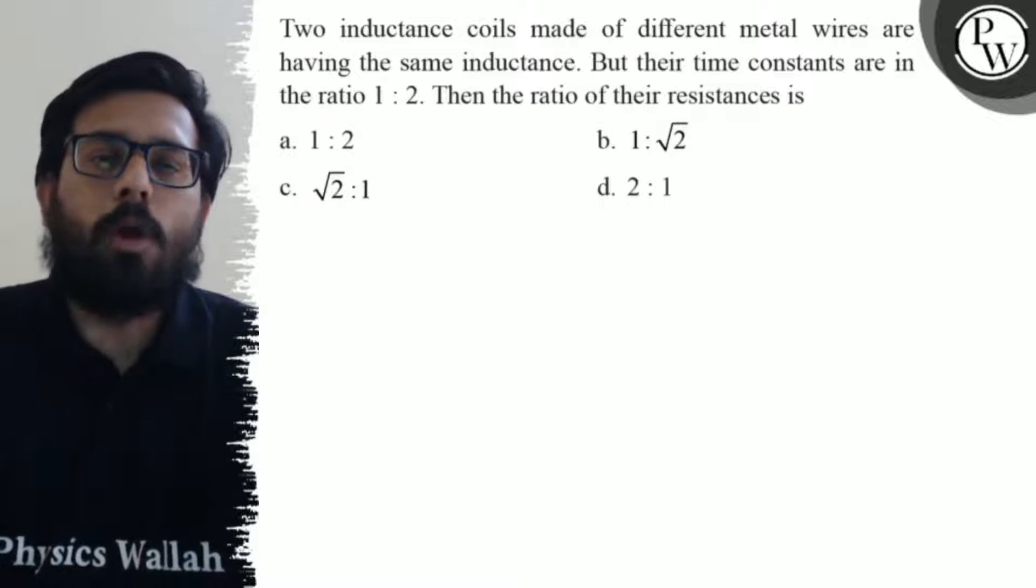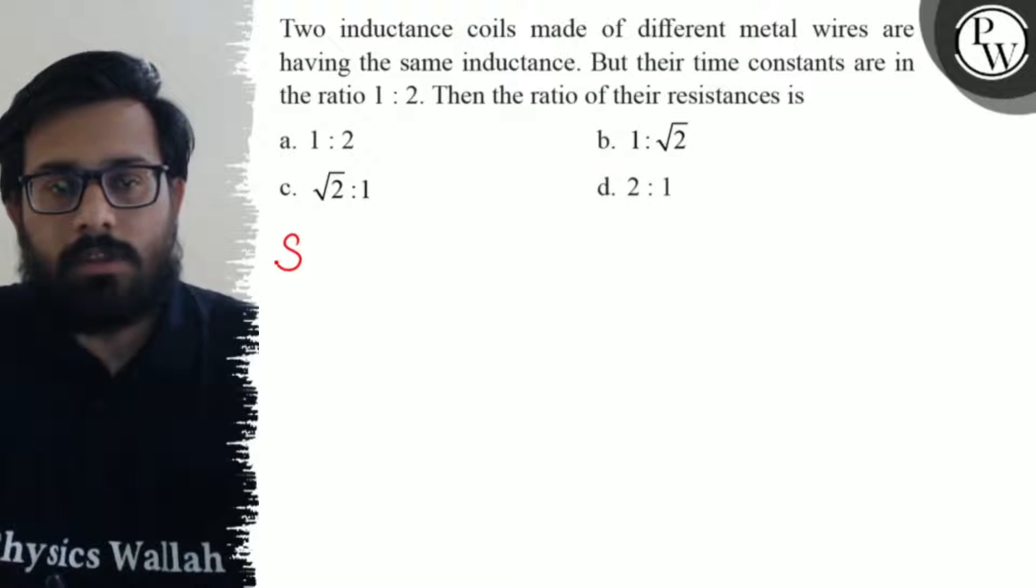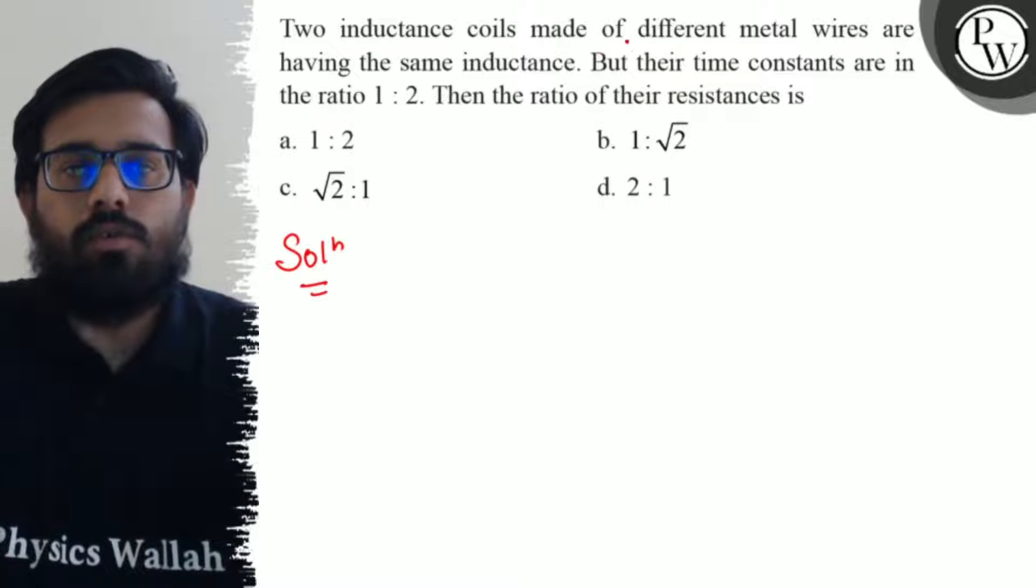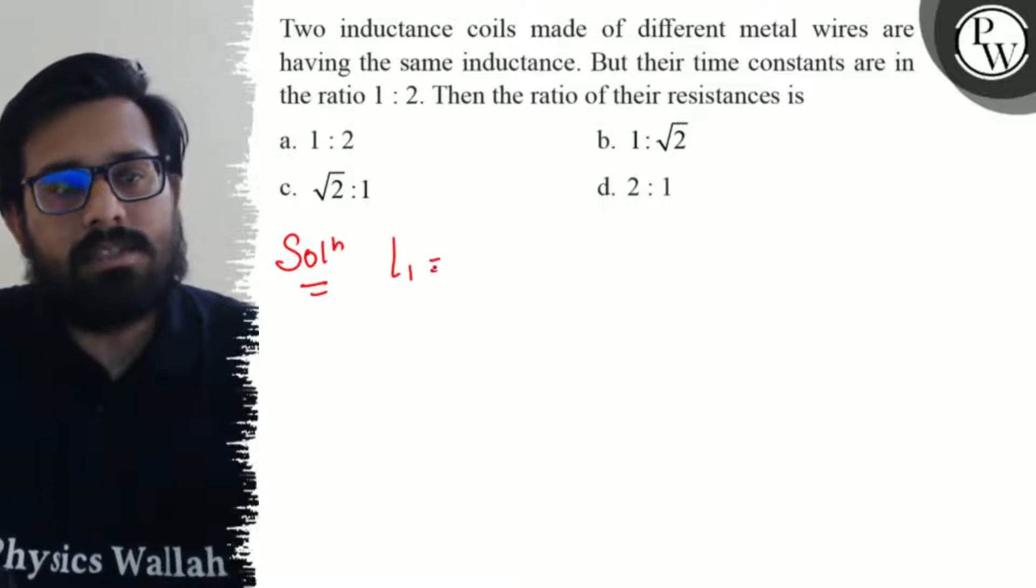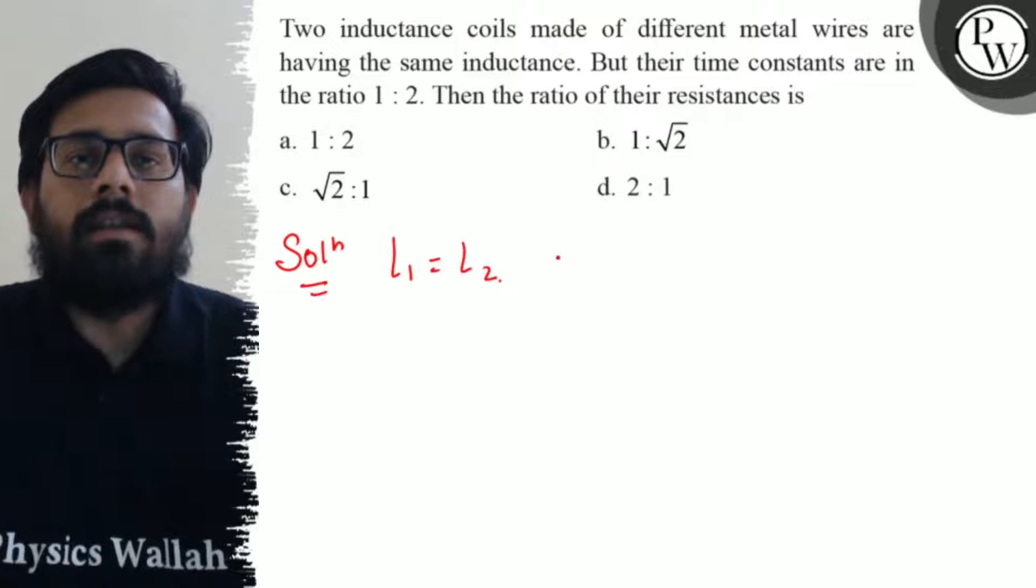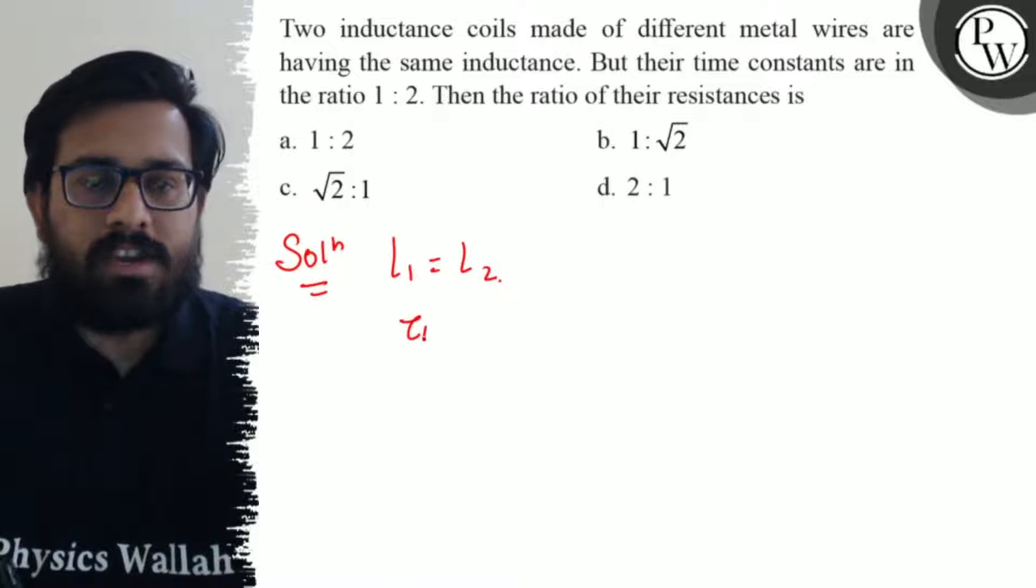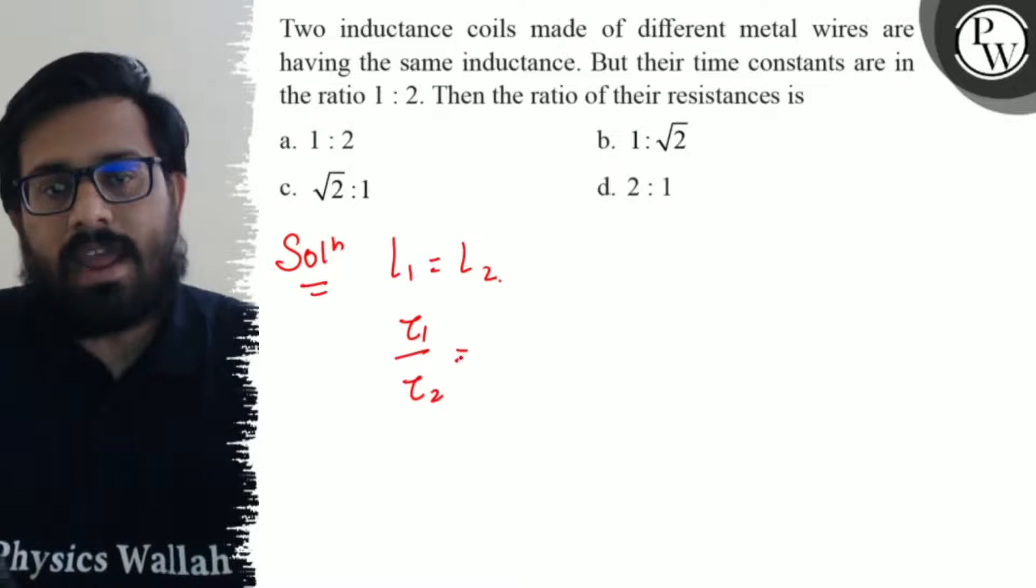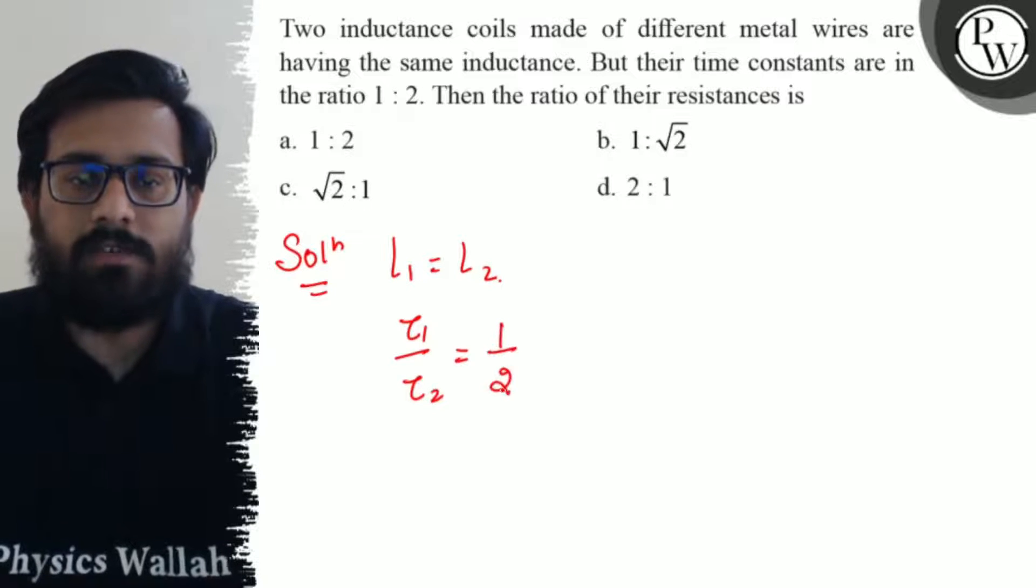d) 2:1. In this question, it is given that the inductance of the two coils are the same, so L₁ = L₂, and their time constants ratio τ₁/τ₂ is given as 1:2.